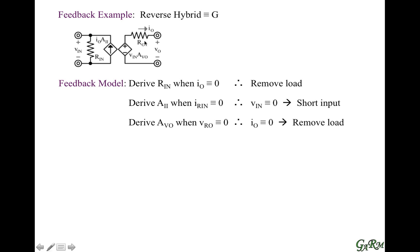When we derive the output resistance, we need to nullify the effects of the voltage source. We look at the signal that controls it, which is the input signal, and that needs to be zero. So we go all the way back to the input and short the input. This is a reverse short circuit test.